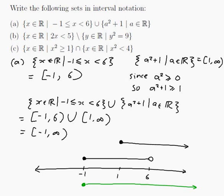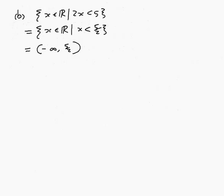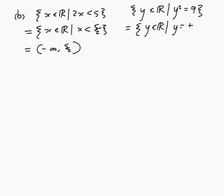The other part is the set of y in R such that y squared equals 9. I can solve that equation: y equals plus or minus 3. I can't write that as an interval, but I can write it as an ordinary set listing the numbers in it: {-3, 3}. It only has 2 numbers in it, whereas the interval has infinitely many numbers.